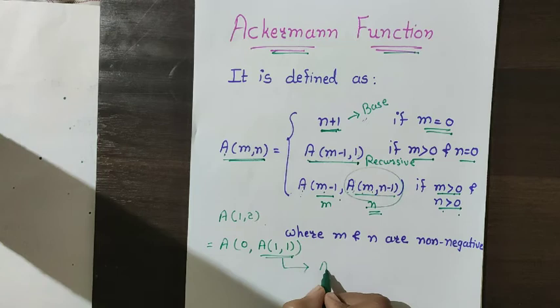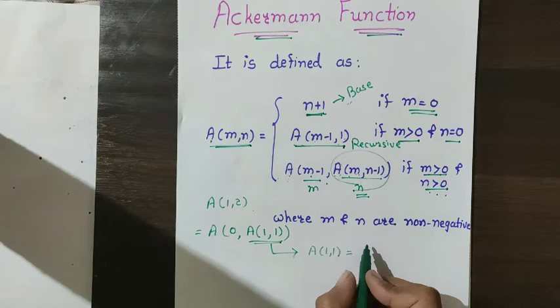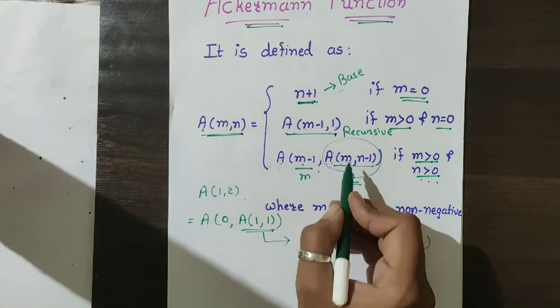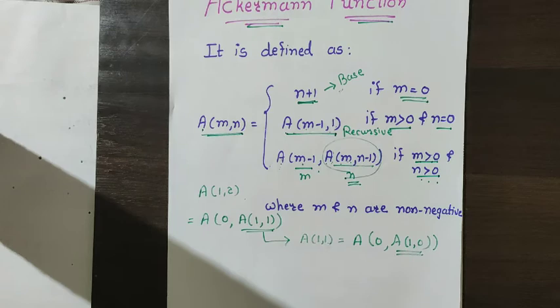Now finding a(1,1): since both are greater than 0, a(1,1) equals a(m minus 1, a(m, n minus 1)), which is a(0, a(1, 0)). So I now need to find a(1,0).